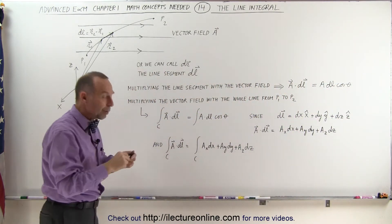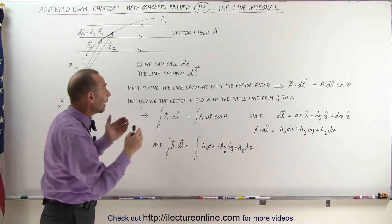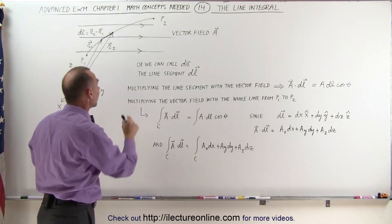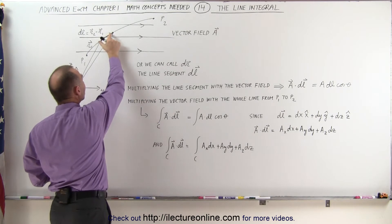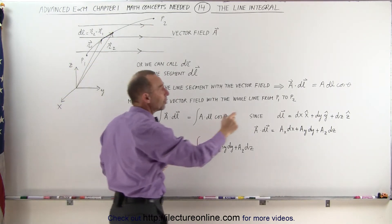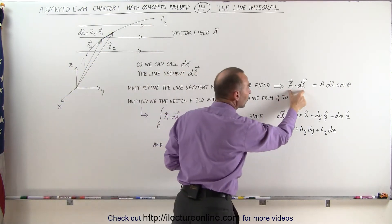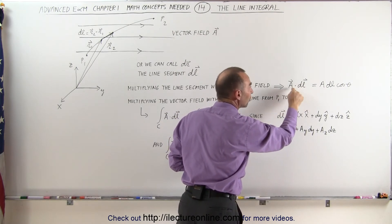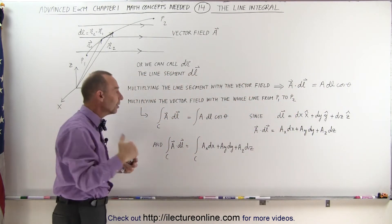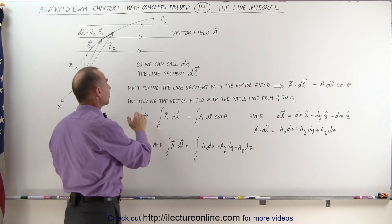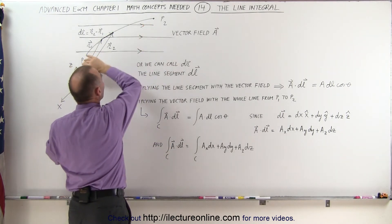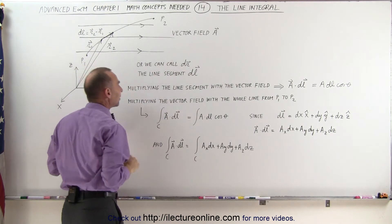Now what do we do when we want to multiply the entire line — not just a small segment but the whole line — with the vector field? We need to sum up all the small multiplications of each dl with the vector field, and that of course becomes an integral. So if we want to multiply the entire line from point one to point two across that vector field, we integrate all those small additions.